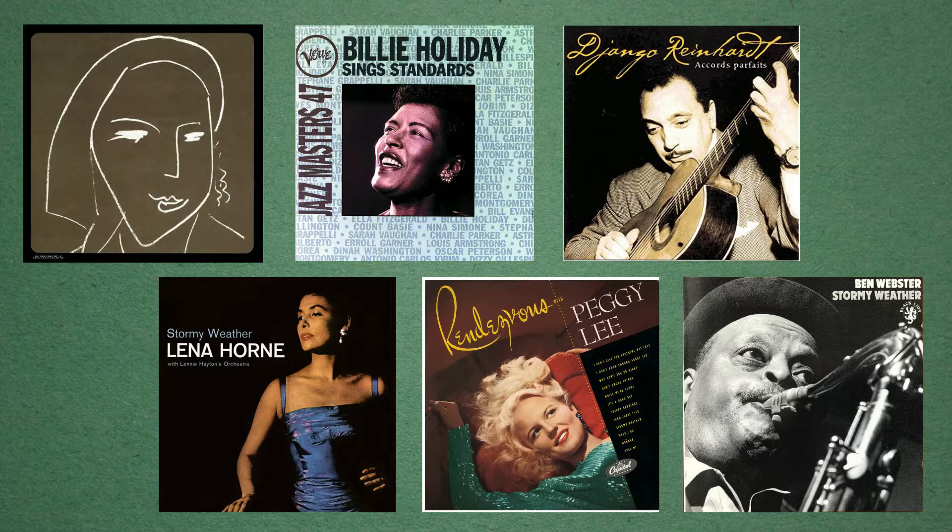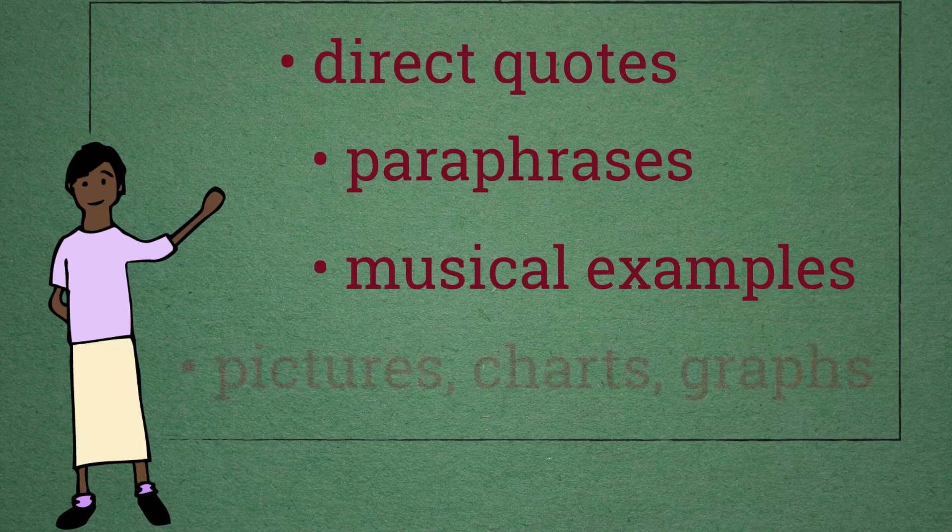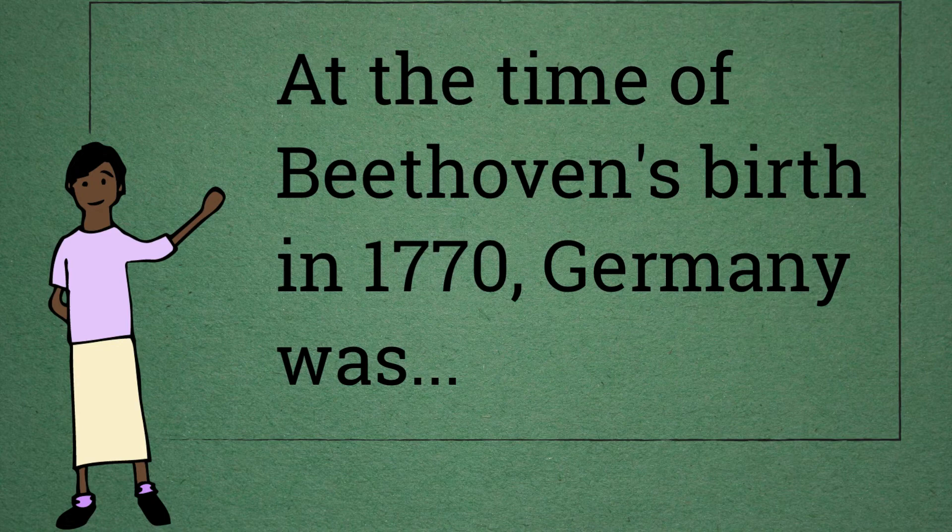When should you cite something? When in doubt, cite. However, as a rule, always cite direct quotes, paraphrases, musical examples, pictures, charts, and graphs. You don't always need to cite widely known facts in your field — for example, composer birth and death dates — but always ask your instructor if you're not sure.